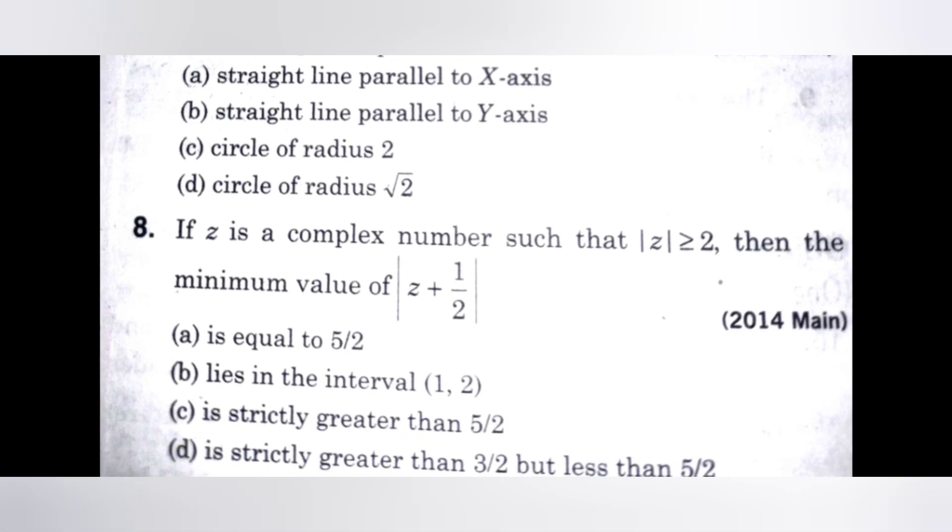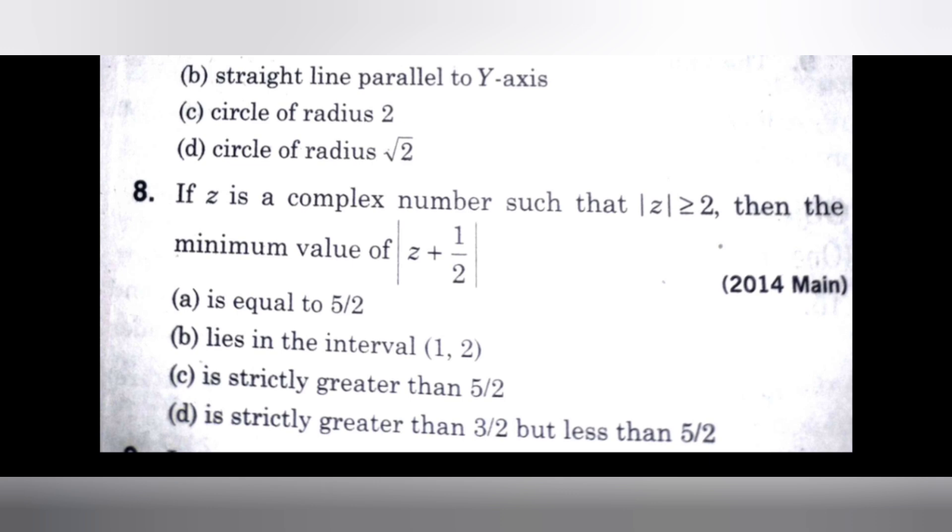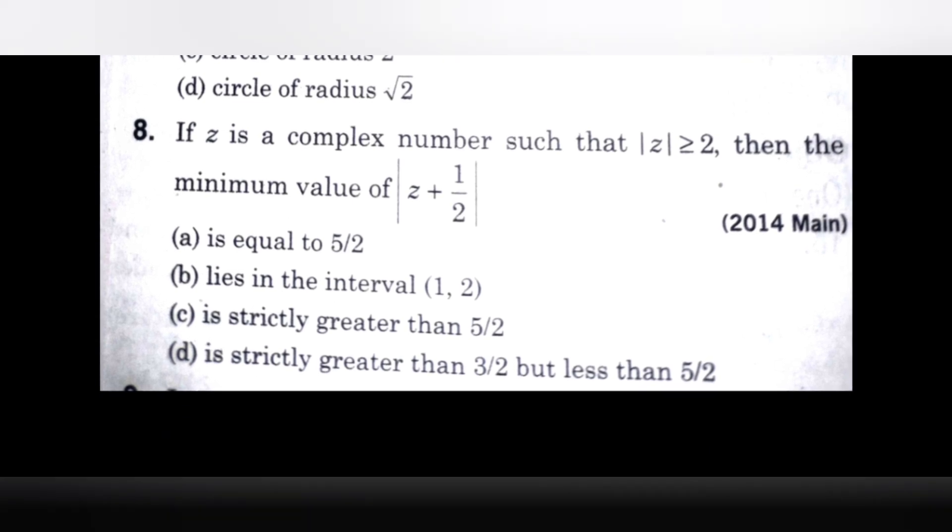Go for the next question. If Z is a complex number such that mod Z greater than or equals 2, then the minimum value of mod Z plus 1 by 2 is. Find that minimum value.